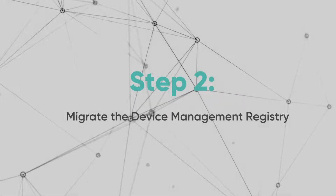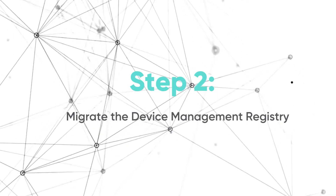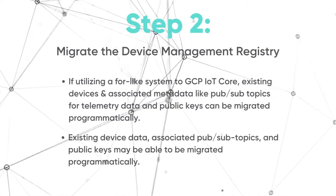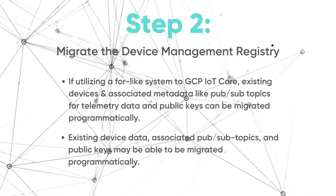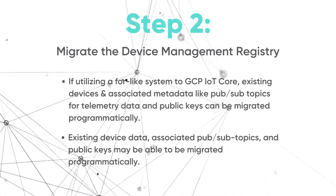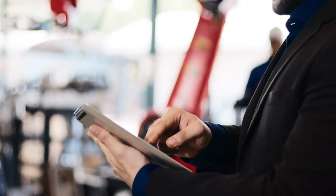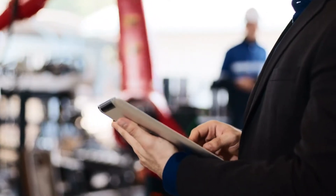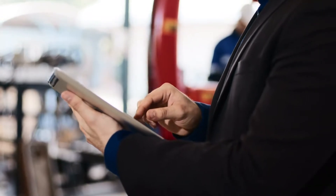Step two: the next step will be migrating your device management registry to the new partner solution. If utilizing a system similar to Google Cloud Platform's IoT Core service, the migration of metadata may be very straightforward and automated migration tooling may be available. For some partner solutions, this is a simple automated process that can be executed in hours.